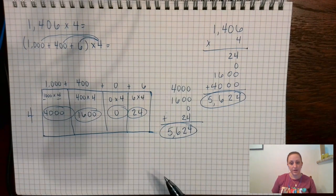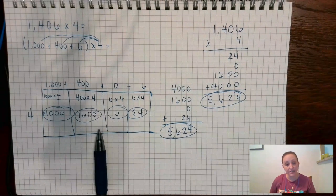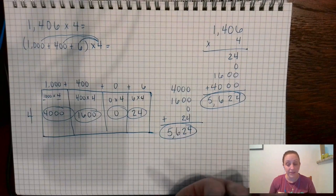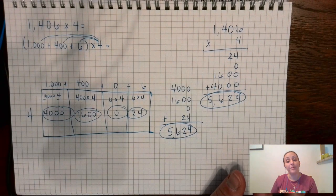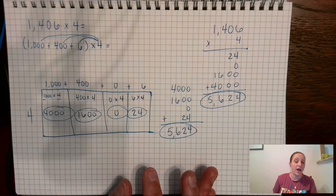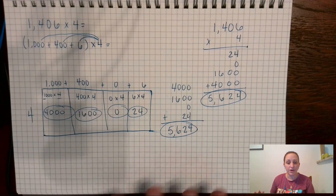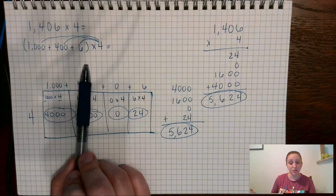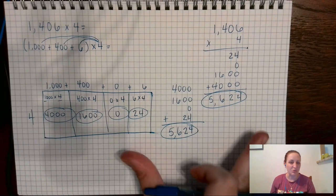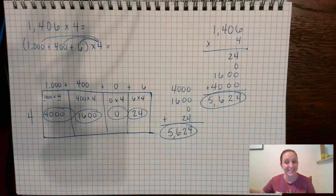When you do the portfolio, make sure you are showing the strategy you're using — whether distributive property, area model, partial products, or the standard algorithm, which we'll go over in another video. You can't just put an answer and get credit; you have to show how you got it and prove your thinking. These are the area model, partial products, and the distributive property — three great strategies. You're doing the same thing each time; it depends on how your brain organizes information. I hope that helps, and I'll see you in the next video. Bye, guys!